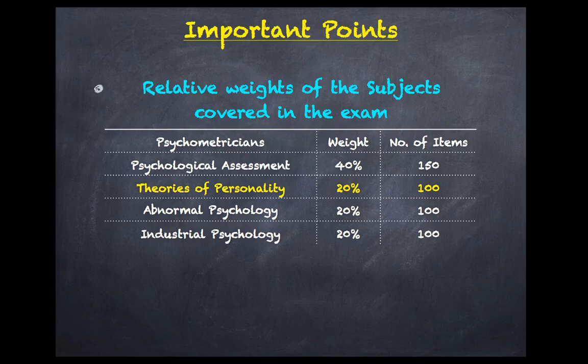Before we formally begin, just some important points to consider for TOP. TOP has a relative weight over other subjects like Abnormal Psychology and I.O. because they cover the same percentage, which is 20% of the total number of items in the upcoming board exam. So it tells us that we really need to be familiar with the different theories of personality and be acquainted with some of the important tenets of every theory.